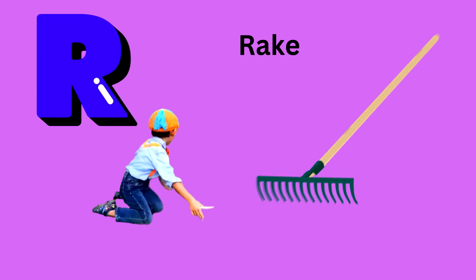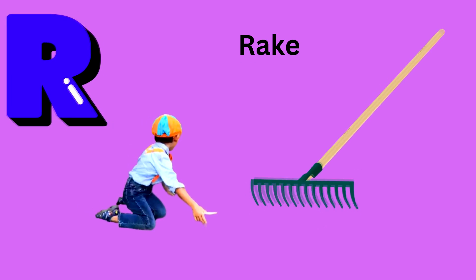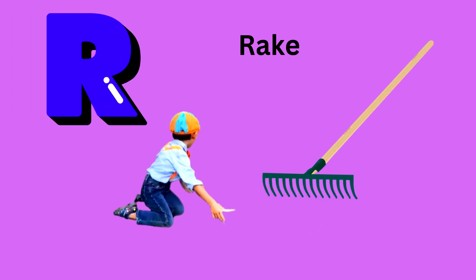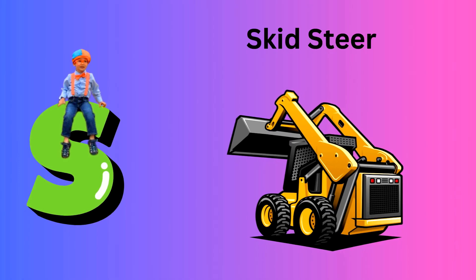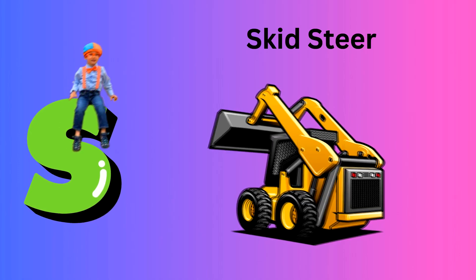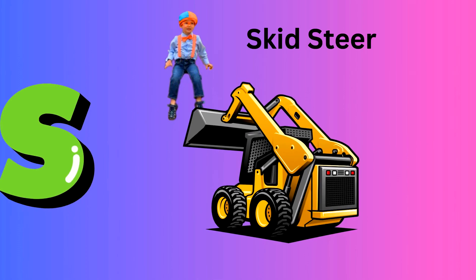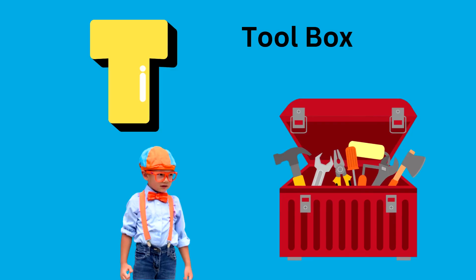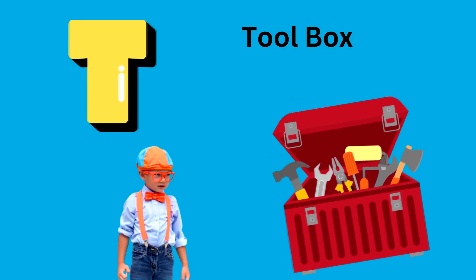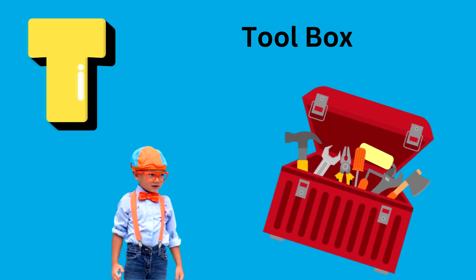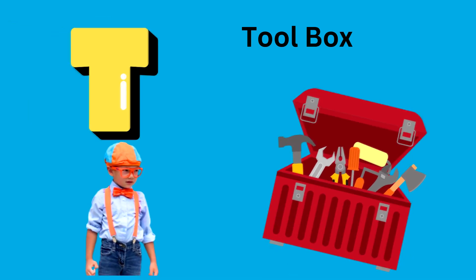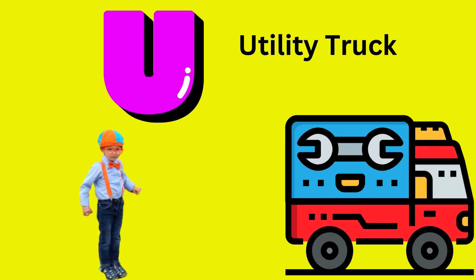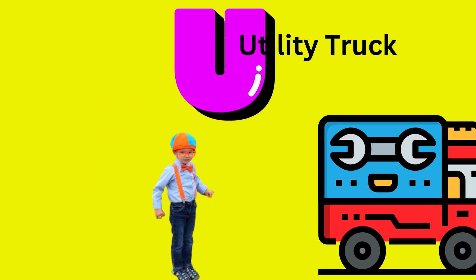R is for Rake. S is for Skid Steer. T is for Toolbox. U is for Utility Truck.